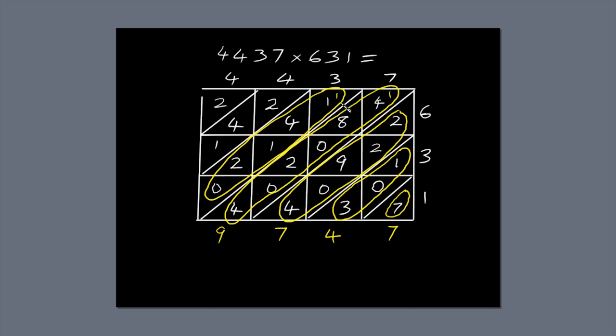1 plus 1 is 2. Plus 4 is 6. Plus 1 is 7. Plus 2 is 9. Write 9 next to the diagonal. 2 plus 4 plus 1 is 7. Write 7 next to the diagonal. The final diagonal has just one number, 2. So write 2 next to the diagonal.